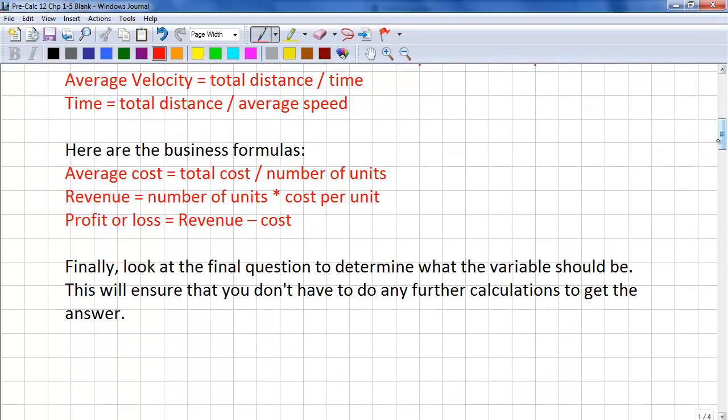Here are some business formulas. Average cost equals total cost divided by number of units. Revenue equals number of units times cost per unit. Profit or loss equals revenue minus cost.